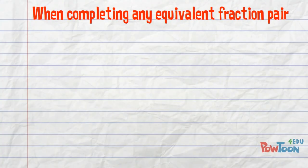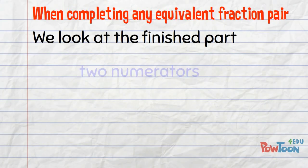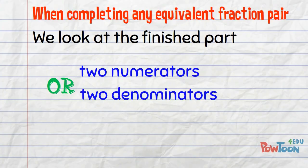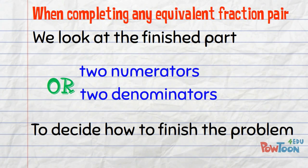You know when completing any equivalent fraction pair we look at the finished part, the two numerators or the two denominators, to decide how to finish it off.